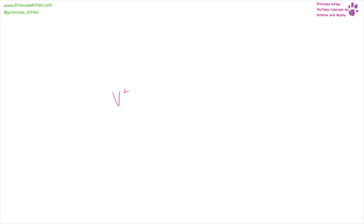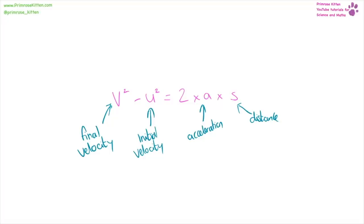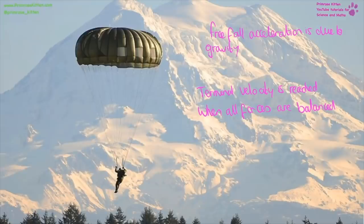Final velocity squared minus initial velocity squared equals two times acceleration times distance. Both final and initial velocity are measured in metres per second, acceleration in metres per second squared, and distance in metres.